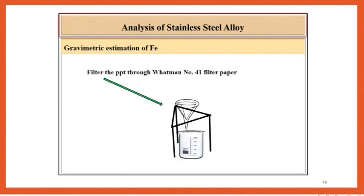Filter the precipitate of Fe(OH)3 through Whatman No. 41 filter paper. The filtrate is yellow due to formation of Na2CrO4.